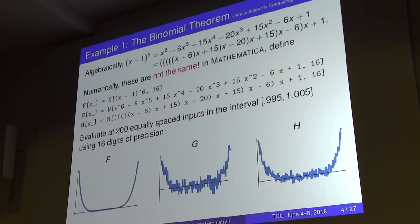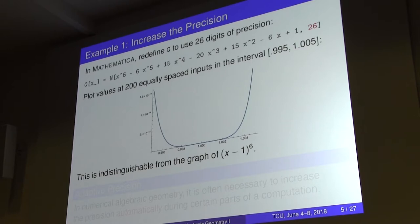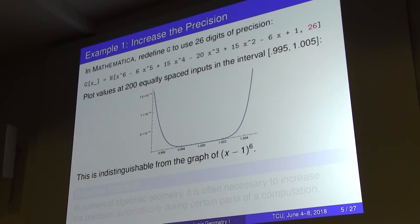So I tried upping the precision. G was the worst one — the pure binomial theorem form. I went from 16 to 26 decimal places and did the exact same thing, and it now looked better. If you increase the precision, even though at one precision it might be bad, at a higher precision it can actually work nicely. In numerical analysis and numerical algebraic geometry, there are cases where you have to increase the precision. But here I did it by an ad hoc process — 16 was terrible, 20 still looked bad, 26 looked pretty good. That's not how you do it on a computer. The computer has to be smart enough to figure out that it needs more precision, and how much more — that's the idea of adaptive precision. All software that does numerical work has to have this kind of intelligence.